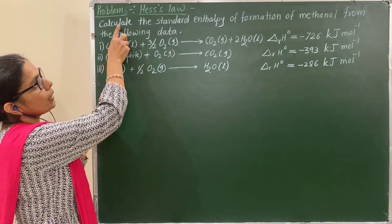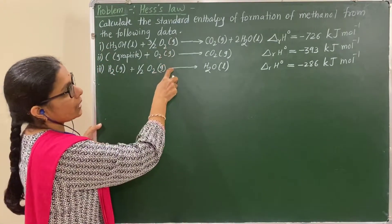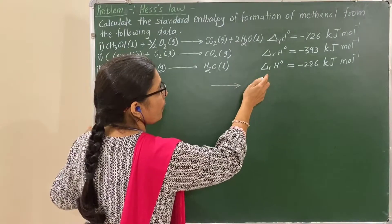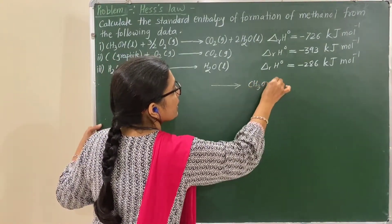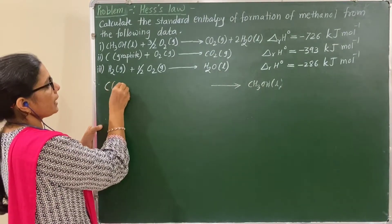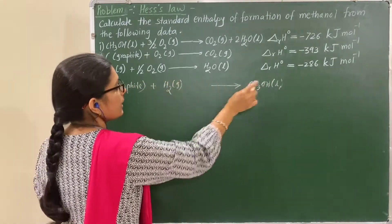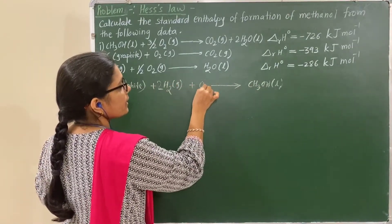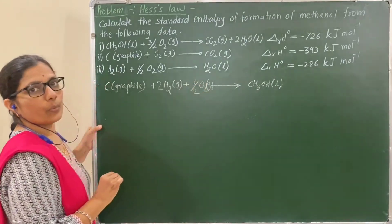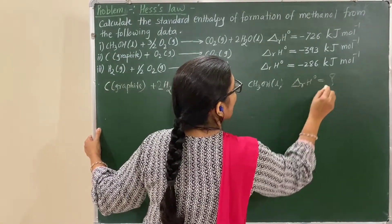Now let us see one numerical based on Hess's Law. Calculate the standard enthalpy of formation of methanol from the following data — these three equations are given. Formation of methanol means one mole of methanol in its standard state, that is liquid, is formed from its constituent elements: carbon in its standard state (graphite), hydrogen in its standard state (H₂ gas), and oxygen in its standard state (O₂ gas). Only half O₂ is required.